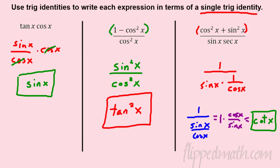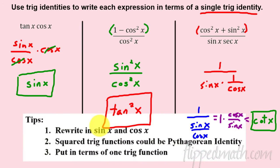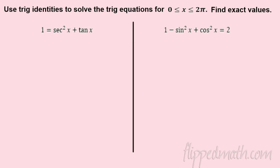These can get unusual at first but get easier with practice. Here are some tips: number one, try to rewrite in sine and cosine, especially if you see tangent or secant. Number two, anytime you see a squared term, look for a Pythagorean identity. Number three, try to get everything in sine or all in cosine.